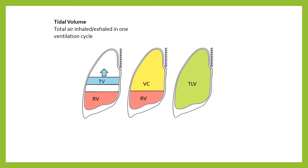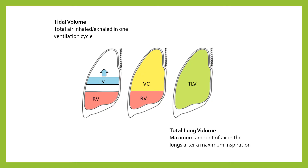The second is total lung volume — simply the entirety of the space within the lungs that could potentially be filled with air. It's the maximum amount of air in the lungs once you've had a maximal inspiration, breathing in as much as you possibly can and really filling your lungs. That maximum volume of air is the total lung volume.